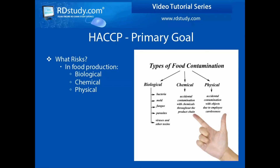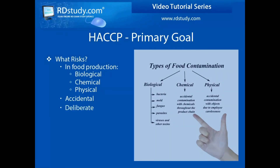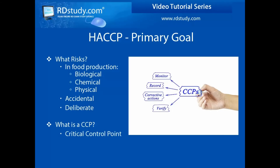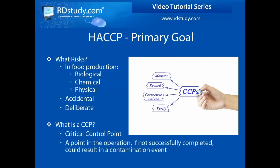It is important to note that accidental contamination as well as deliberate contamination attempts must be addressed. A critical control point, or CCP, is the point where if the system, step, control, or procedure is not properly followed or implemented, a contamination event could or is more likely to occur. An example of a CCP in food service could be cooking food to a predetermined temperature for a specific length of time.